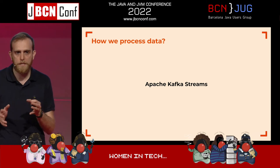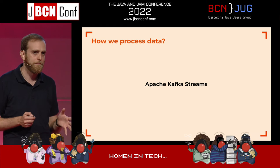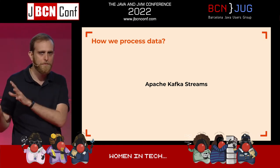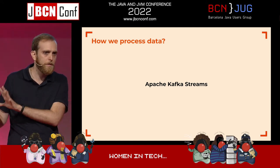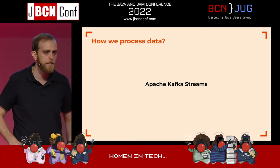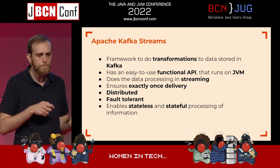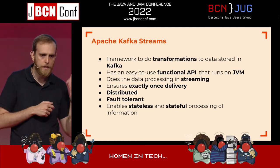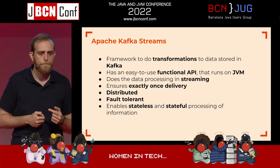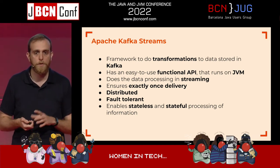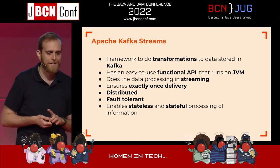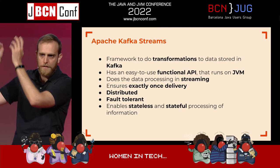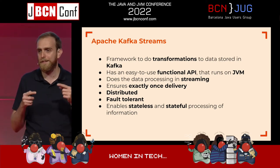Apache Kafka Streams is a piece of technology bundled with Apache Kafka — but it's not the Kafka cluster. It's a library that runs apart from Kafka, in your own cluster built from instances. It provides a framework to do transformations on data stored in Kafka. It's an easy-to-use, functional-style API that runs on the JVM. It's a program that continually runs and processes information.